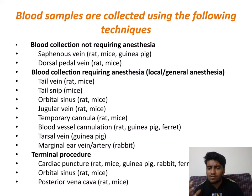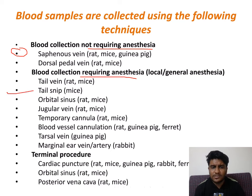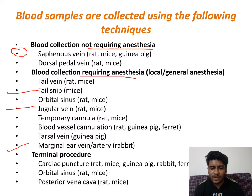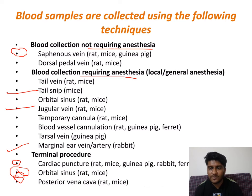Blood sample collection is very, very essential once you have an animal. There are different techniques — some requiring anesthesia and some that do not. The cephalic vein is the most widely used technique for blood collection. For collection not requiring anesthesia, tail snip is most commonly used. Marginal ear vein is widely used in rabbits. Jugular vein is also used. Terminal procedures involving animal sacrifice include cardiac puncture, retroorbital, and posterior vena cava.